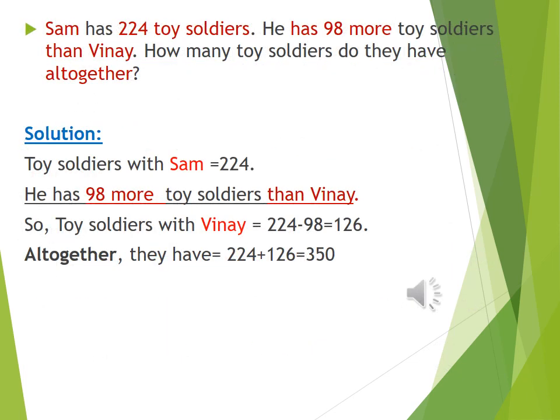Sam has 224 toy soldiers. He has 98 more toy soldiers than Vinay. How many toy soldiers do they have all together?